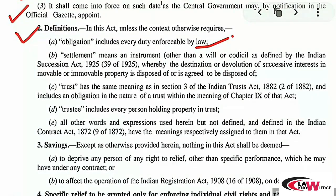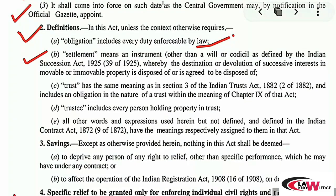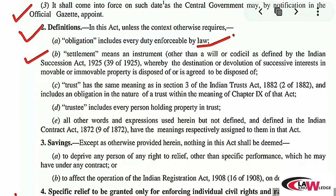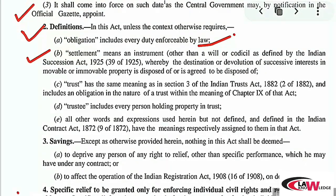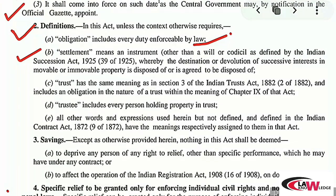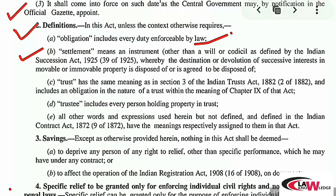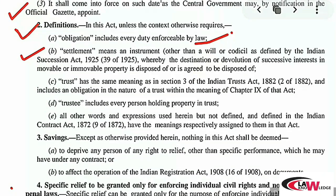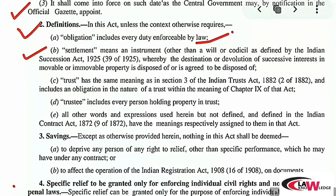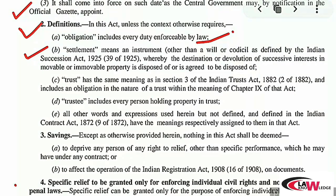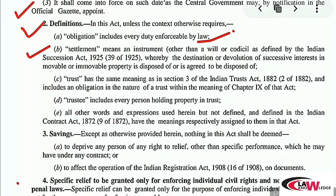The second definition is 'settlement.' It says: settlement means an instrument other than a will or codicil as defined by the Indian Succession Act, whereby the destination or devolution of successive interest in movable or immovable property is disposed of, or is agreed to be disposed of. In simple terms, it means any instrument or document through which a movable or immovable property is disposed of — that is a settlement. For example, if you want to mortgage a property, you enter into an instrument — that becomes a settlement.